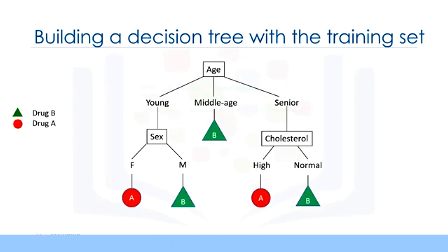If the patient is middle-aged, then we'll definitely go for drug B. On the other hand, if he is a young or a senior patient, we'll need more details to help us determine which drug to prescribe. The additional decision variables can be things such as cholesterol levels, gender, or blood pressure. For example, if the patient is female, then we will recommend drug A. But if the patient is male, then we'll go for drug B.